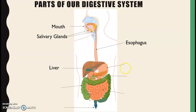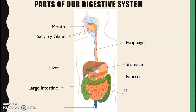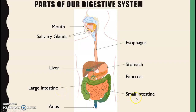This very large organ is called the liver. Here we have one of the most important organs, which is our stomach. Here you have the pancreas. This very large tube is called the large intestine. Next, here you have our small intestine, and finally we have our anus. In Spanish: boca, glándulas salivales, esófago, hígado, estómago, páncreas, intestino grueso, intestino delgado, y ano.